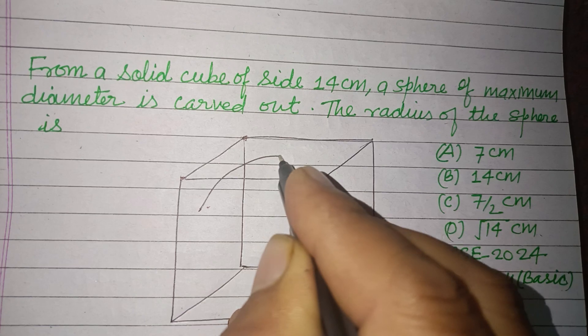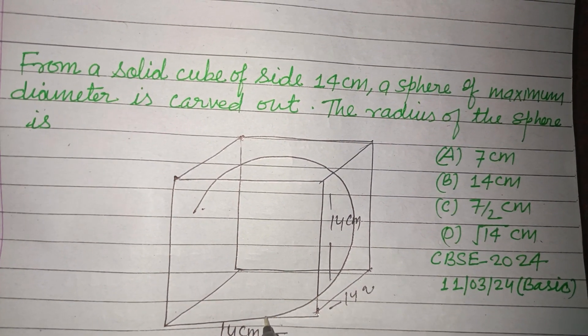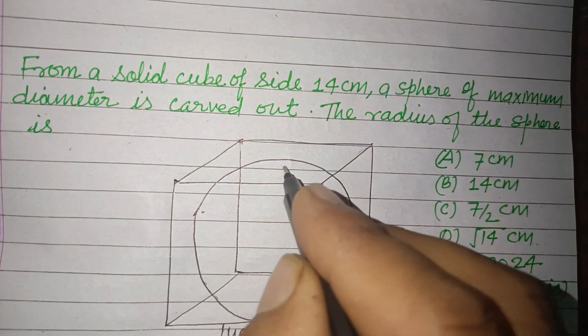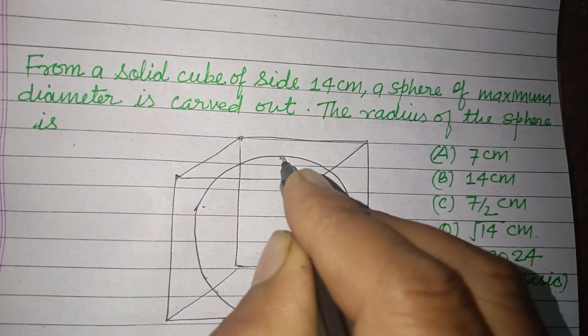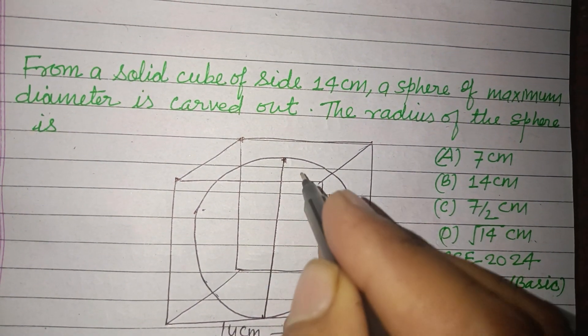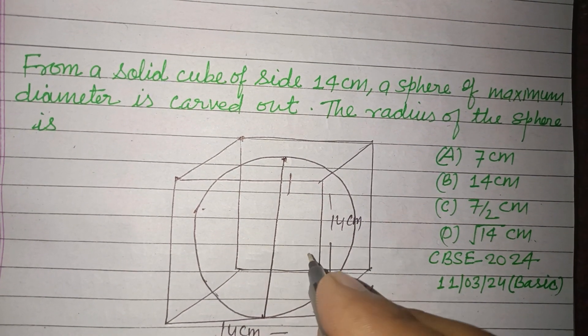So a sphere which touches the roof of the cube and also the base of the cube has maximum diameter. So this point to this point, which is the length of the side of the cube, becomes the diameter.